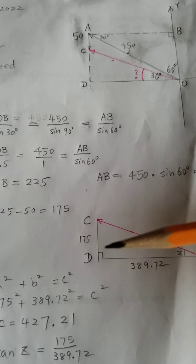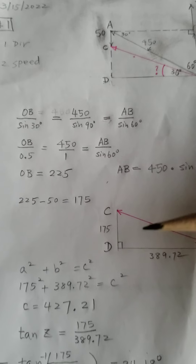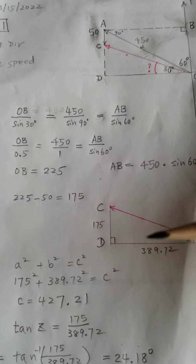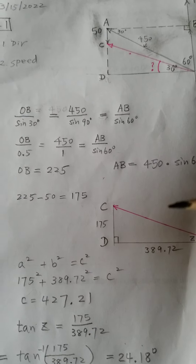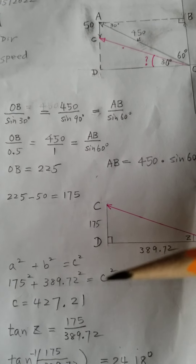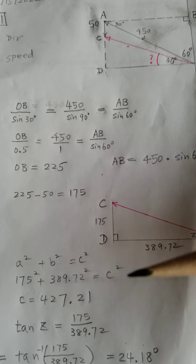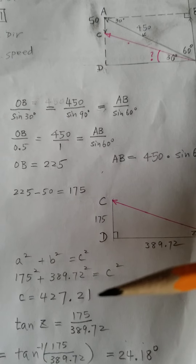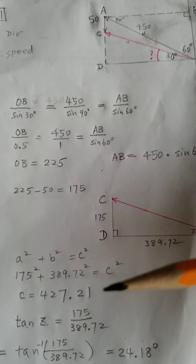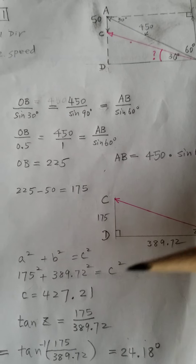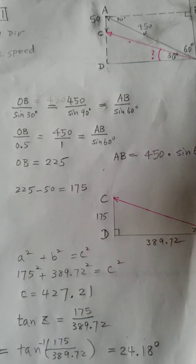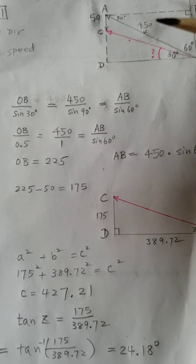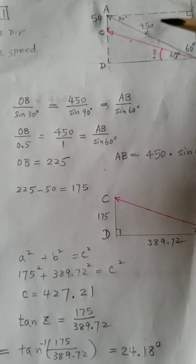It's a right triangle, so we can figure it out. A squared plus B squared equals C squared. We find that C is 427.21. And you can say, yeah, it's a little bit less than 450 — so that's about right.